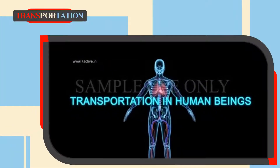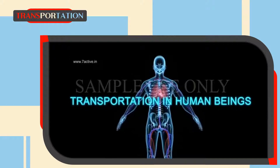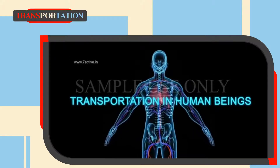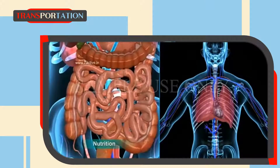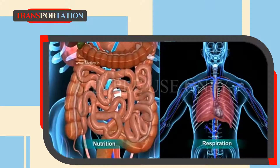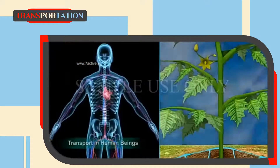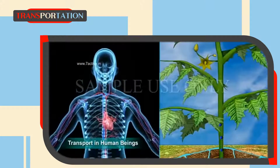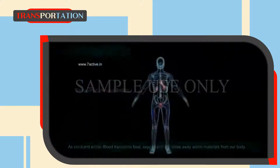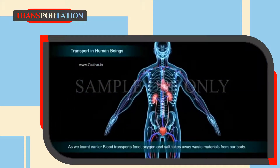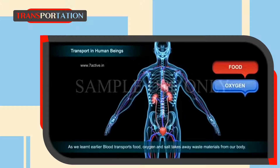Transportation in human beings. As we studied earlier about nutrition and respiration in animals and plants, now we discuss about the transport in human beings and in plants. Blood transports food, oxygen, and salts, and takes away waste materials from our body.